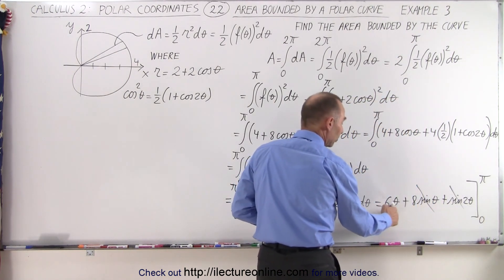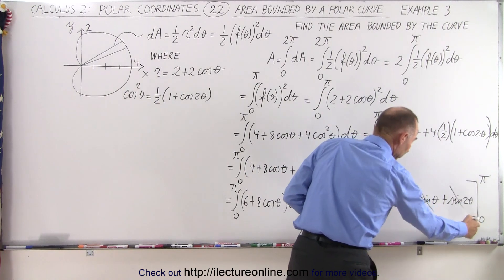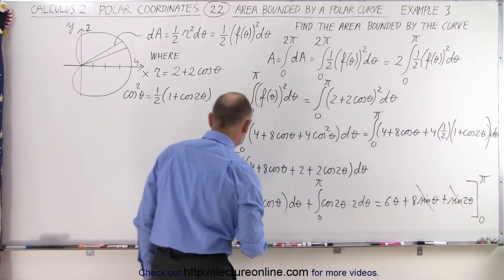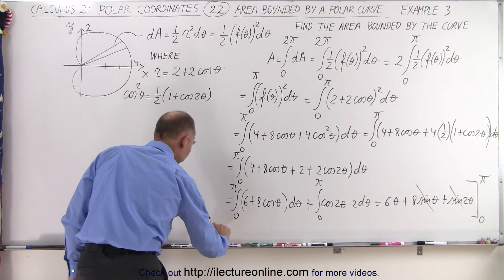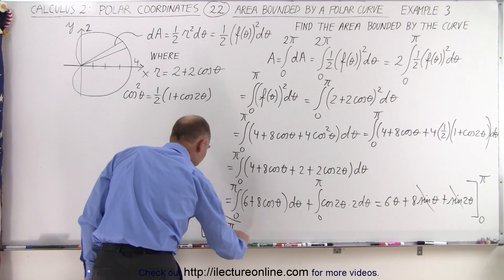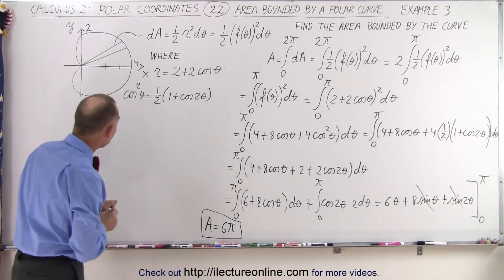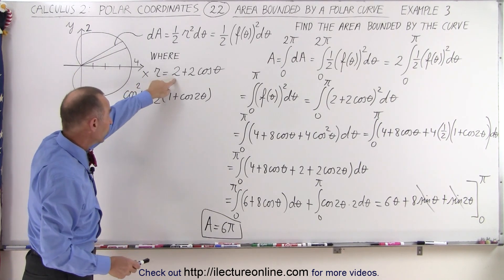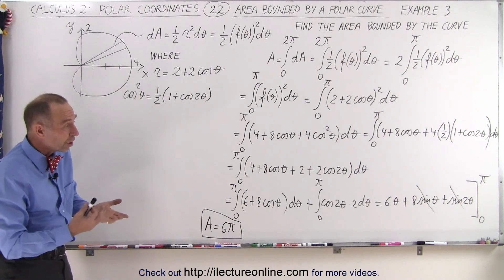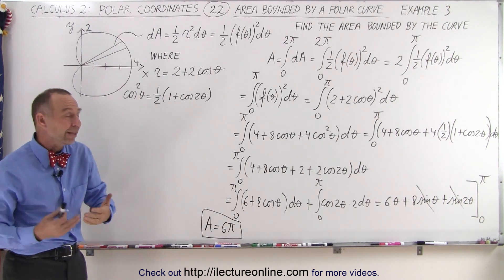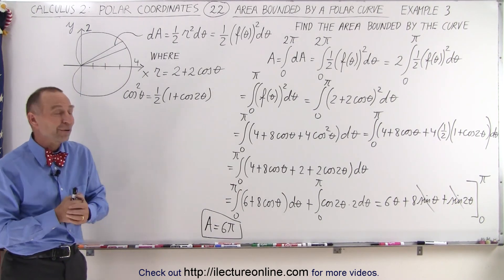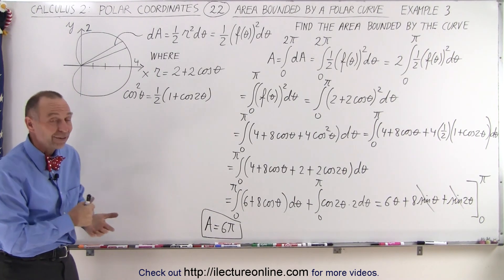The only thing that matters is 6 theta, evaluated from 0 to pi. When you plug in the lower limit, you get 0. When you plug in the upper limit, we get pi. That means that the area is equal to 6 pi. And there we go. That is the area bounded by the function r equals 2 plus 2 times the cosine of theta. So again, polar coordinates in general can be fairly easy. The hardest part often is just finding the limits of integration. And that's how it's done.